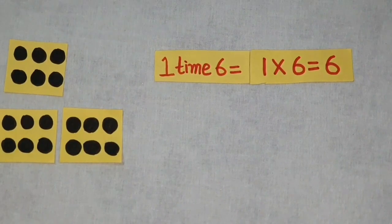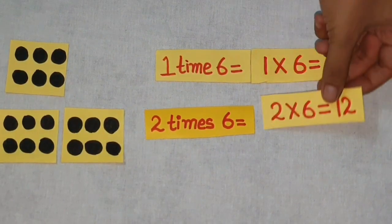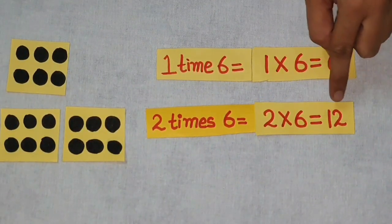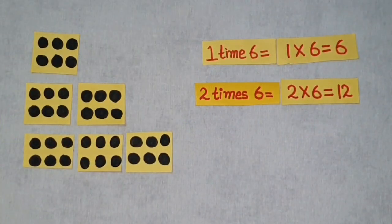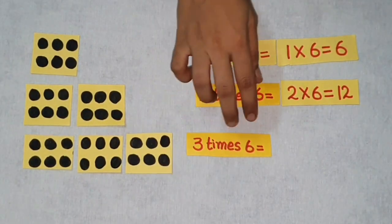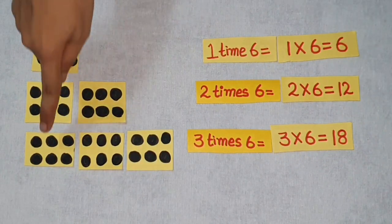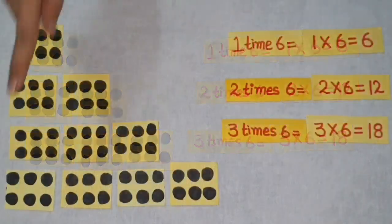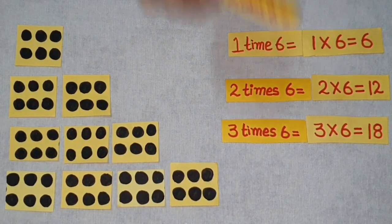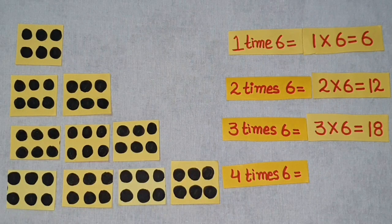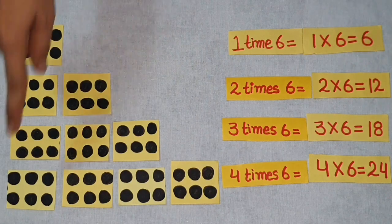There are two groups of 6 dots. 2 times 6 is equal to 2 into 6 is equal to 12 dots. There are three groups of 6 dots. 3 times 6 is equal to 3 into 6 is equal to 18 dots. There are four groups of 6 dots. 4 times 6 is equal to 4 into 6 is equal to 24 dots.